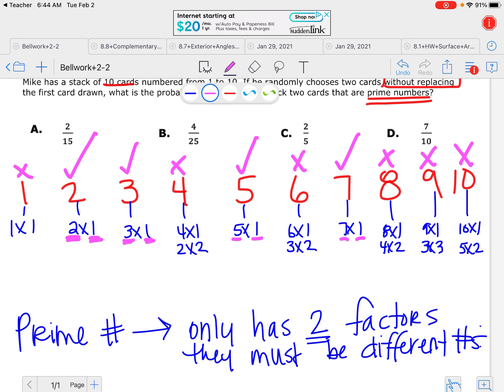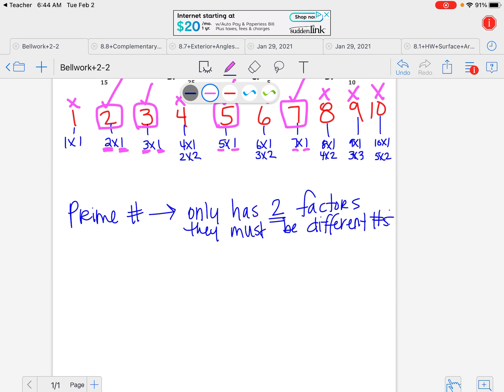So the ones with check marks, a 2, a 3, a 5, and a 7. So to fit that, if I want to say my probability of getting a prime number over the total.